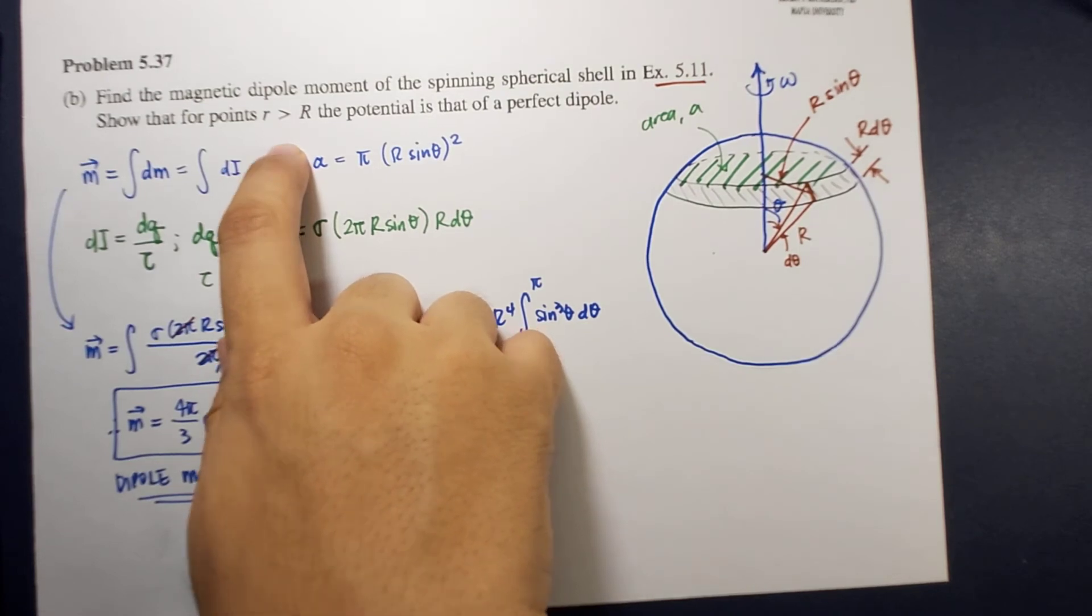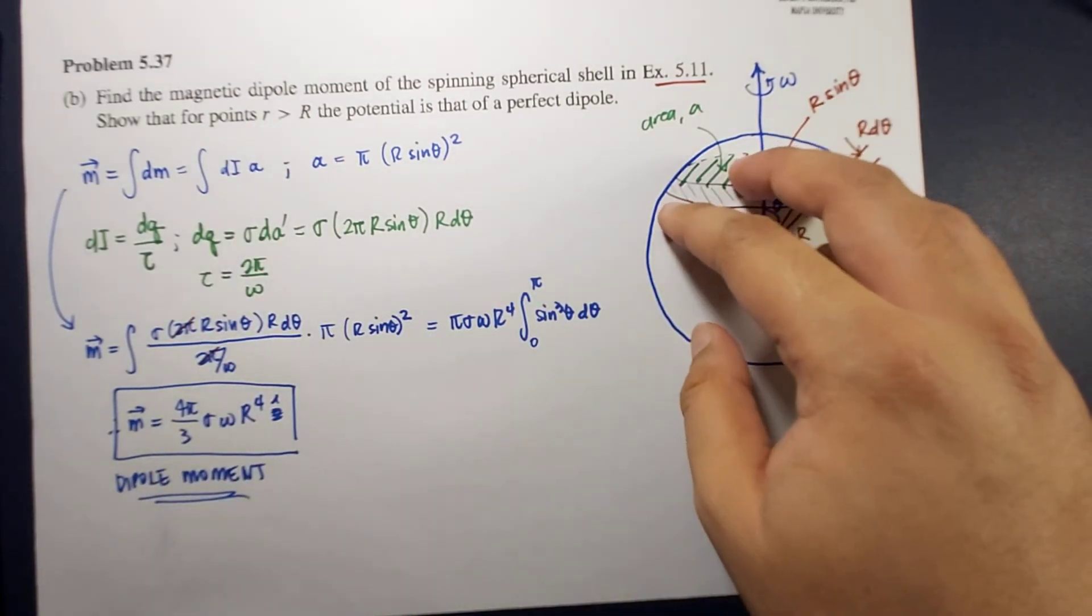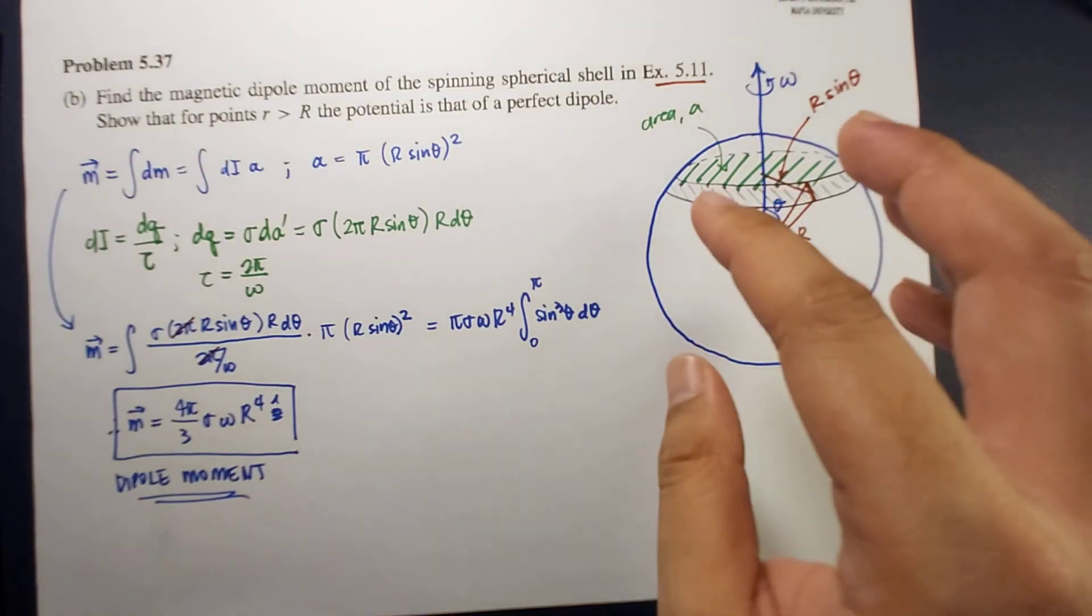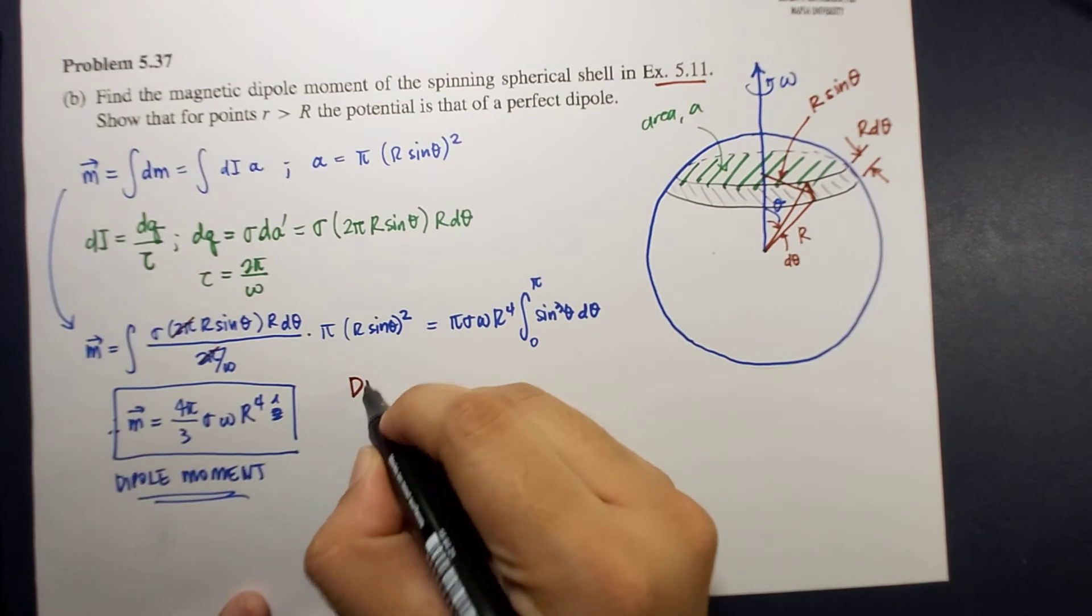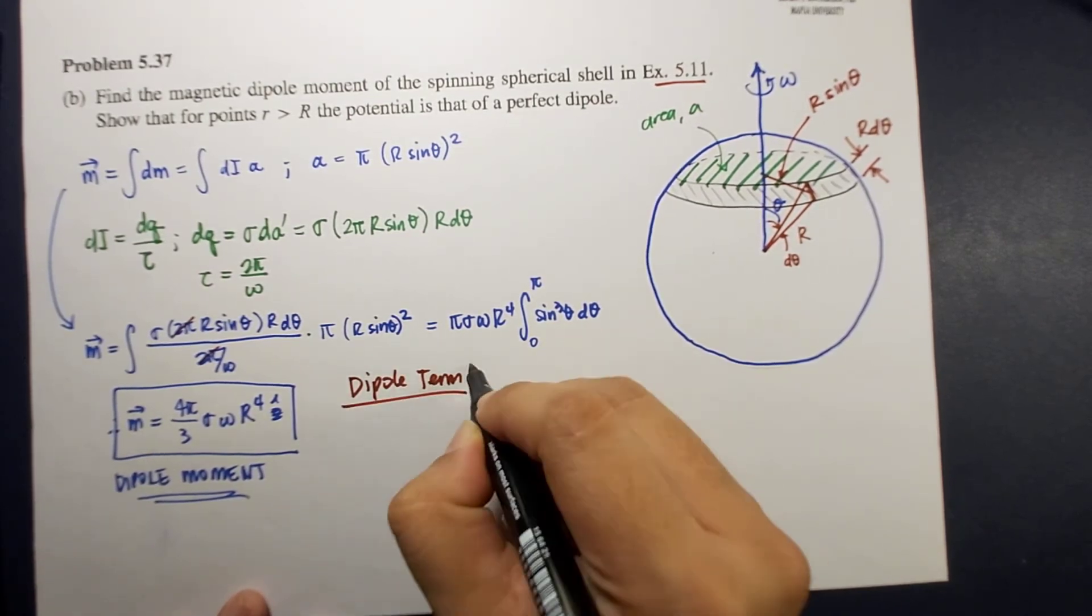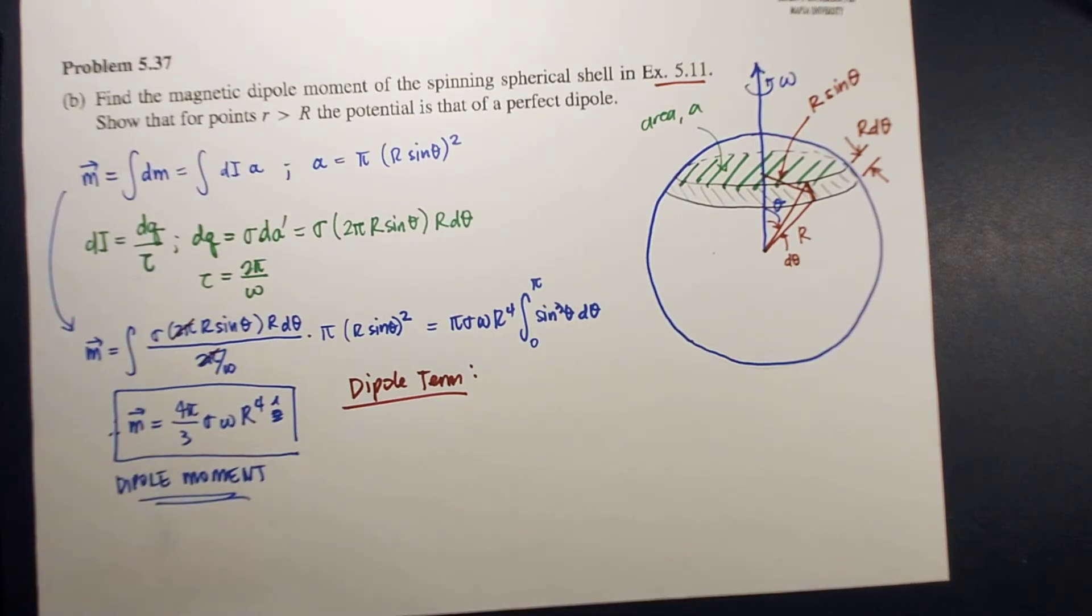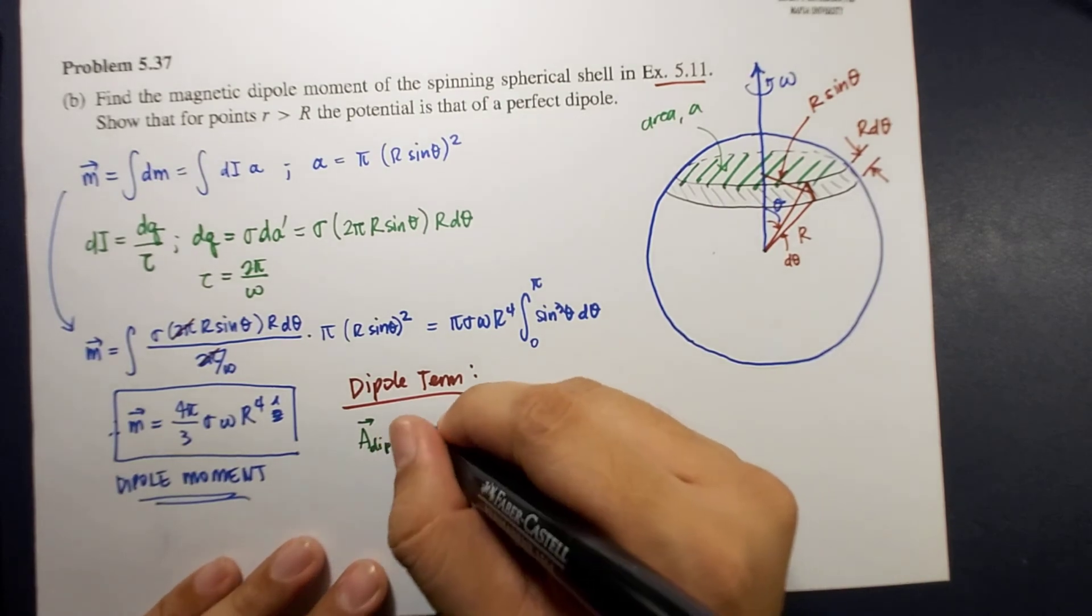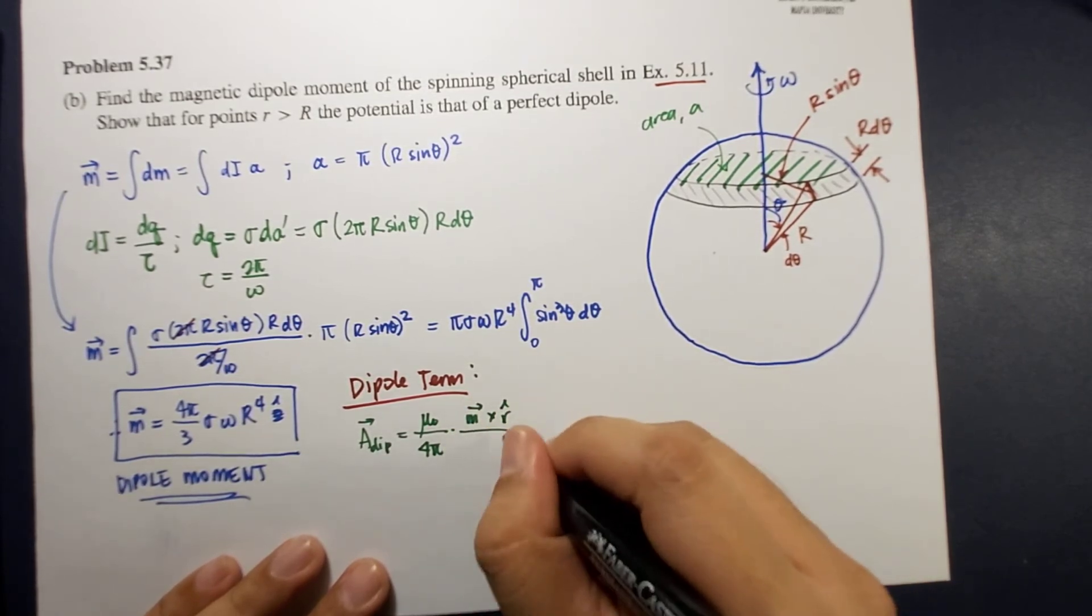Because we know that we're going to look for the potential for points far away from the sphere, we can use the multipole expansion. Because this is a multipole expansion for the magnetic vector potential A, remember the magnetic monopoles do not exist, so you go straight to the dipole term. The dipole term, based on the multipole expansion for the magnetic vector potential A, is given by A_dip equals μ₀ over 4π times M cross r-hat over r squared.